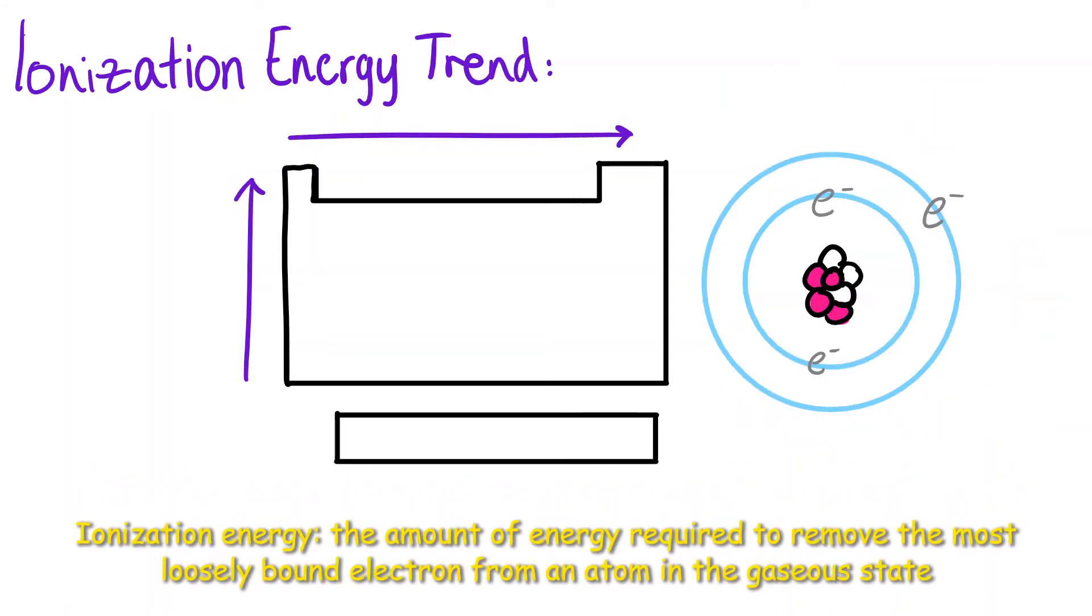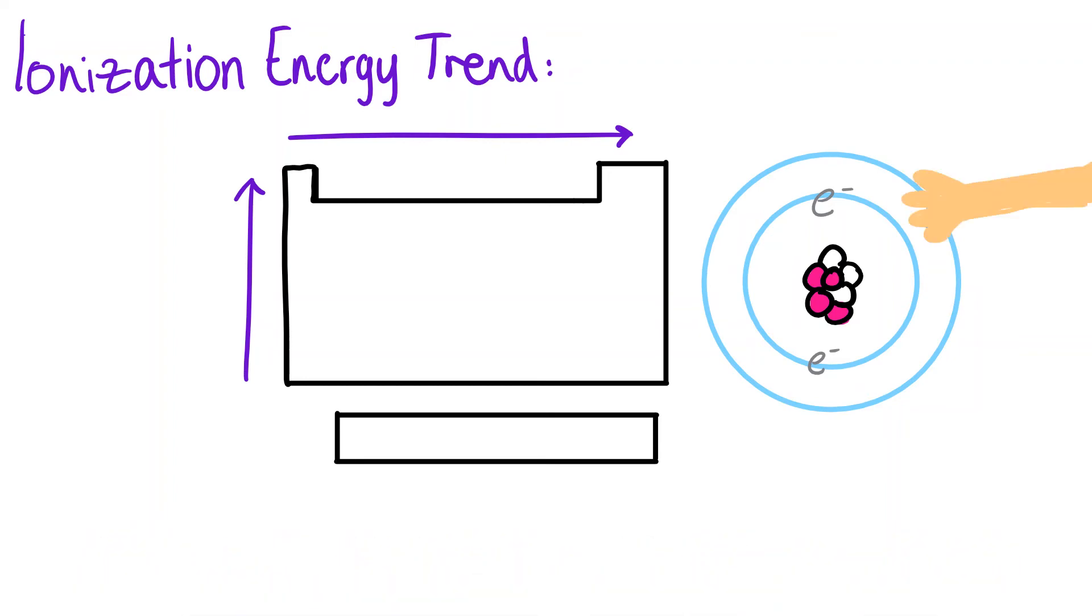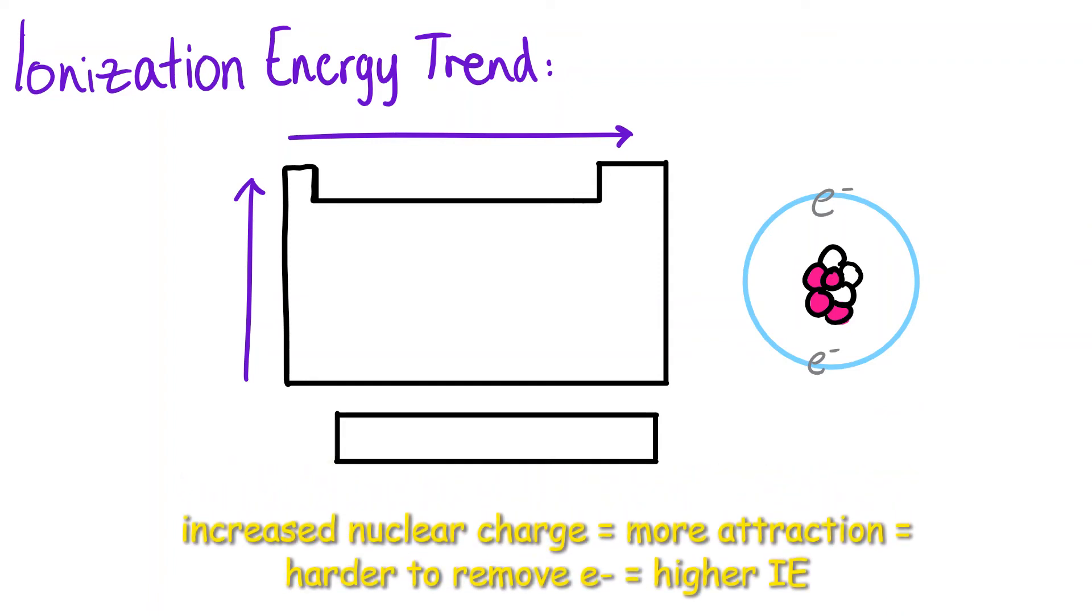Next is ionization energy, the amount of energy needed to remove the most loosely bound electron from an atom. Remember that across a period, nuclear charge increases while the energy level remains constant.